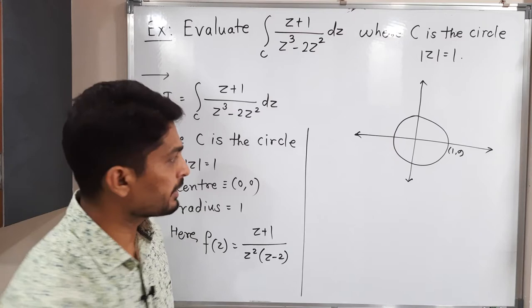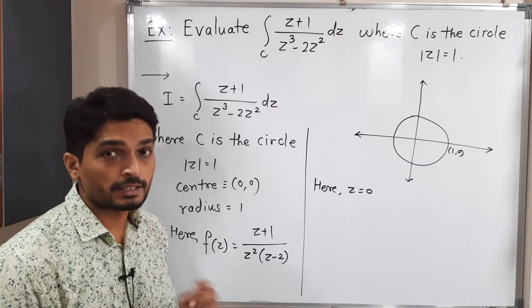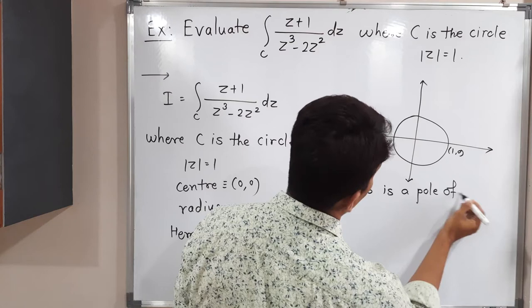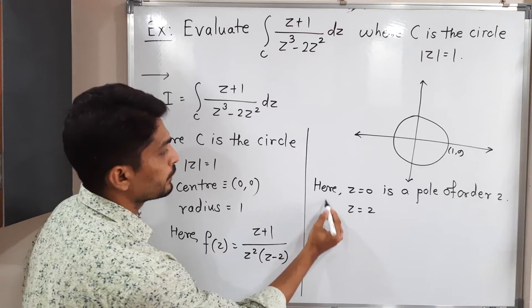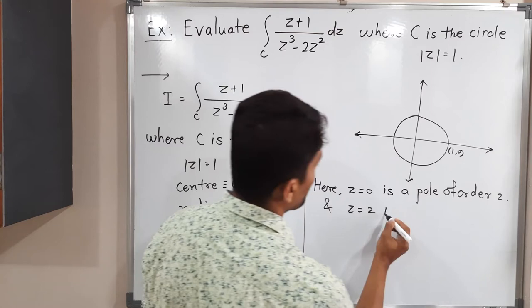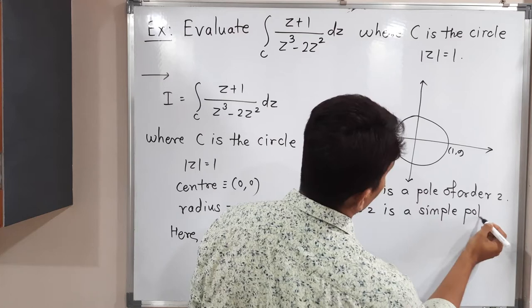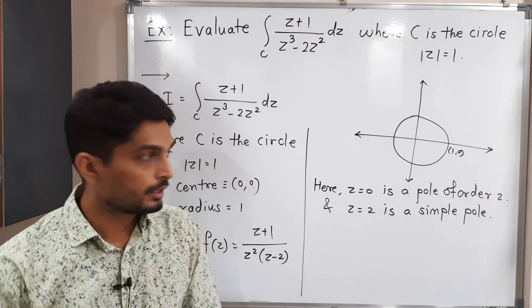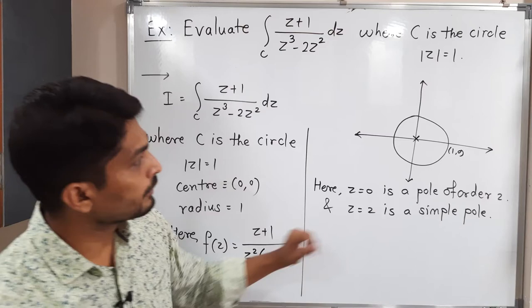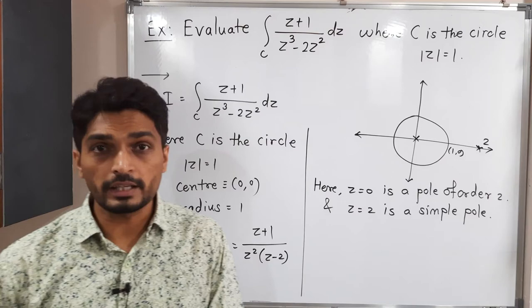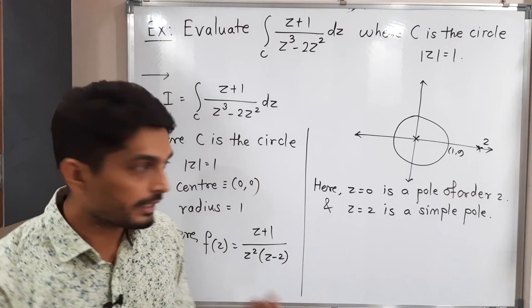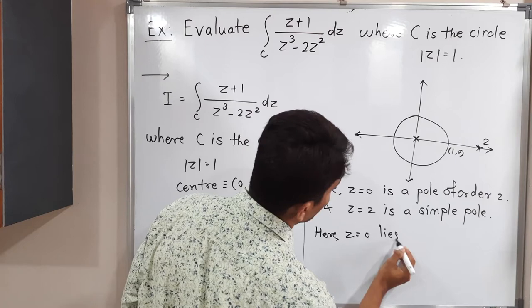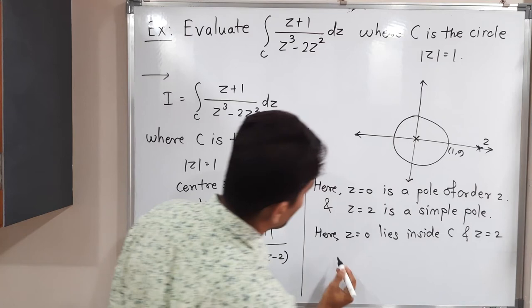Z = 0 is a singular point, but it has power 2, so it is a pole of order 2. And Z = 2, since putting Z = 2 also makes the denominator zero, it is a simple pole — a pole of order 1. Now, those poles should lie inside the circle for us to consider them. Z = 0 lies inside C, and Z = 2 lies outside C.